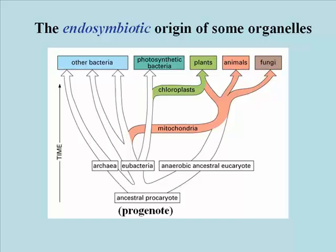Some time ago, it was shown that isolated mitochondria and chloroplasts both contain DNA and RNA, and that they in fact replicate DNA, and transcribe the DNA into RNA, and make their own proteins.